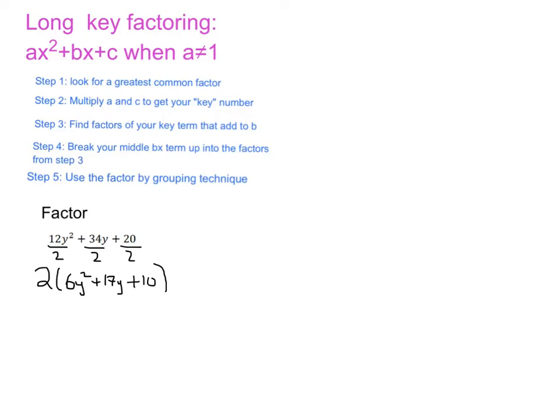So we took care of our first step, which was to look for a greatest common factor. Now we're on step 2, which is multiply a and c to get your key number. So take a look down here, you see I have a new a and c value.